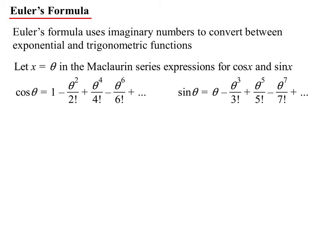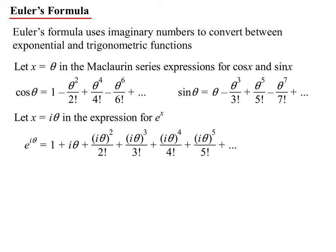Sine was all the odd ones. Now if I let x equal i theta and put that in the expression for e to the power of x we would get this. Now why make it i theta? Well because I want to create that alternating. When I square i I will get negative one and so we'll get minus theta squared on two factorial, but then the next one will be minus i theta cubed on three factorial, but then plus theta to the four on four factorial and so on.